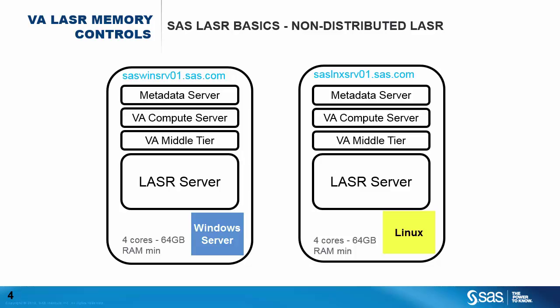The minimum configuration for a non-distributed environment is four cores and 64 GB of RAM, or 16 GB of RAM per core.